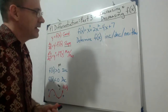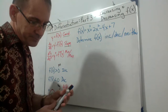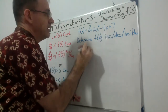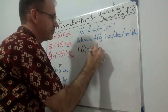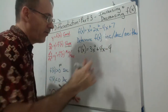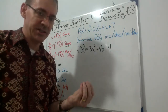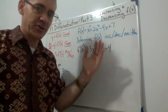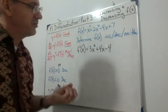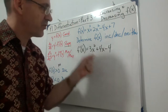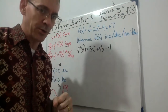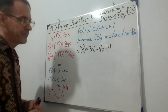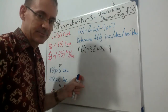Since we're dealing with increasing/decreasing, we find the first derivative. So f′(x) = 3x² + 4x − 4. Now we have a new decision to make: since it didn't tell us increasing or decreasing, we can't set it greater than or less than zero. We need to determine whether this is always positive, always negative, or a mixture of both. We ended up with a quadratic.